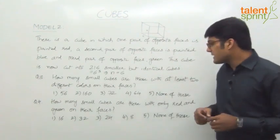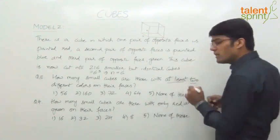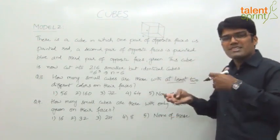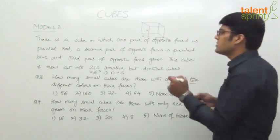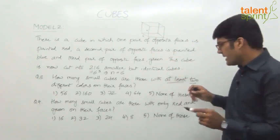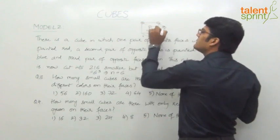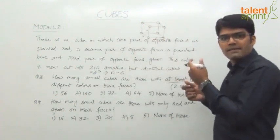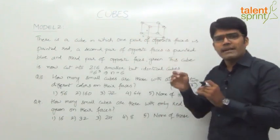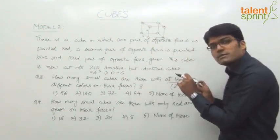Question 3: how many small cubes are there with at least 2 different colors on their faces? At least 2 means it can be 2 or 3 colors. In this case, opposite faces are painted in the same color. So front and back are red, right and left are green, bottom and top are blue. At least 2 implies both 2 and 3 different colors qualify. Obviously, each of the corners will have 3 different colors — if you look at one corner, the front is red, one side is green, and the top is blue. So red, green, blue. Any corner will be a combination of 3 different faces from 3 different axes — 3 different colors. There are 8 corners, so 8 small cubes have 3 different colors.